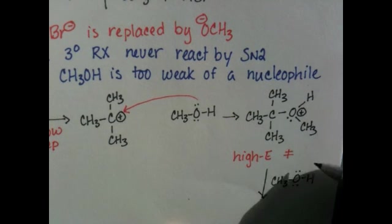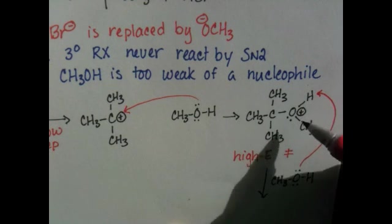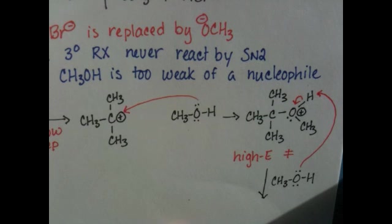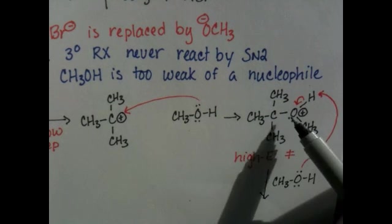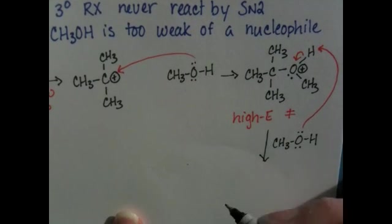The lone pair of electrons on the methanol will go to that proton, remove it from this transition state, and the oxygen-hydrogen bonding electrons will end up as a lone pair, a second lone pair on that oxygen atom. So, we then will end up with our product.